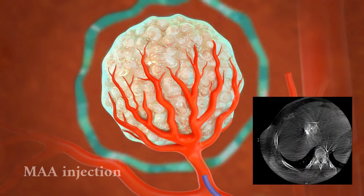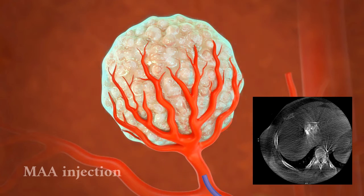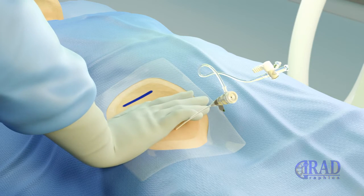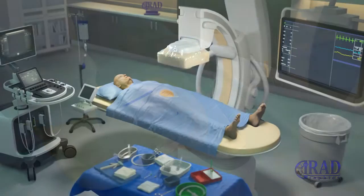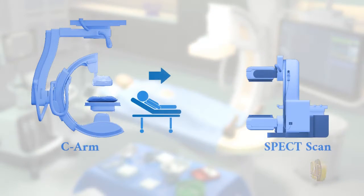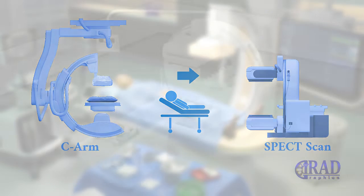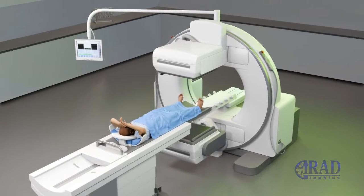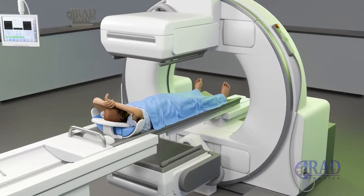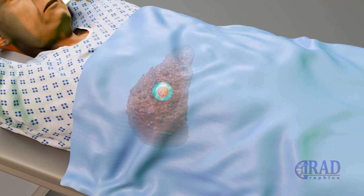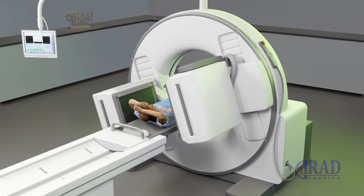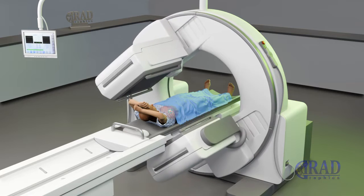Once the infusion of technetium-99m macro aggregated albumin is complete, the catheters are carefully removed and the access site is securely closed. Following this, the patient is moved to the nuclear medicine unit for a SPECT-CT scan, which is instrumental in identifying the deposition of technetium-99m macro aggregated albumin within the tumor, lungs, and potentially other organs. This aspect of the procedure is key to assessing any extrahepatic deposition and ensuring the safety of subsequent radioembolization.